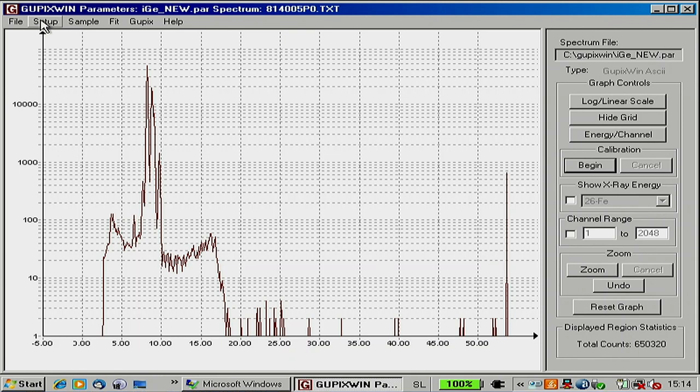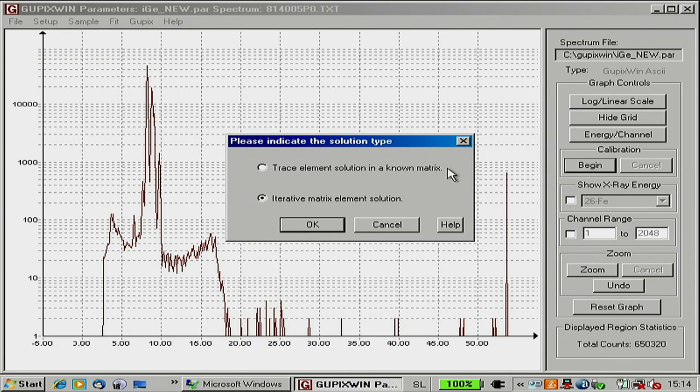Now comes a pain. In GUPIX, you must go through all these steps. First, you should define whether it's a trace element solution in a known matrix. We are using this, for example, you have a plant material homogenized matrix in cellulose, and you're looking for PPMs of zinc in it. That's trace element in known matrix. Here, we don't know anything. We just know it's alloy, and we need to do that iteration I was also mentioning at the beginning of my talk. Computer needs to assume matrix, calculate concentration, and then correct the matrix and do again. And once it converges, it will stop automatically. Okay, so iterative matrix solution.